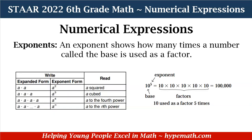Let's also talk about exponents, because we saw one with 2 squared. An exponent shows how many times a number, called the base, is used as a factor. On the left-hand side we have a chart: a times a is a squared; a times a times a is a to the third power, or a cubed; and a times a times a times a is a to the fourth power. On the right-hand side, the base is 10 and the exponent is 5, meaning I am multiplying 10 by itself 5 times: 10 times 10 times 10 times 10 times 10, which equals 100,000.